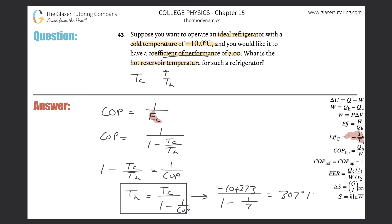307 degrees Kelvin. If you need that in Celsius, simply subtract the 273. All right, and it would be 33.8. Guys, thanks for tuning in, please remember to help us out and subscribe, and we'll see you in the next problem. Take care.